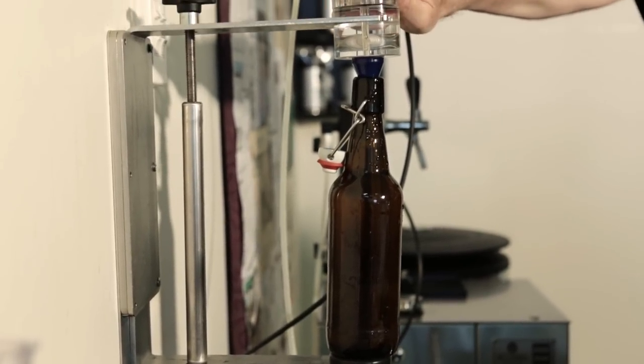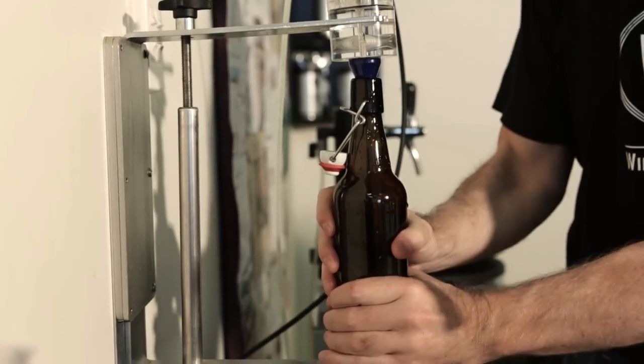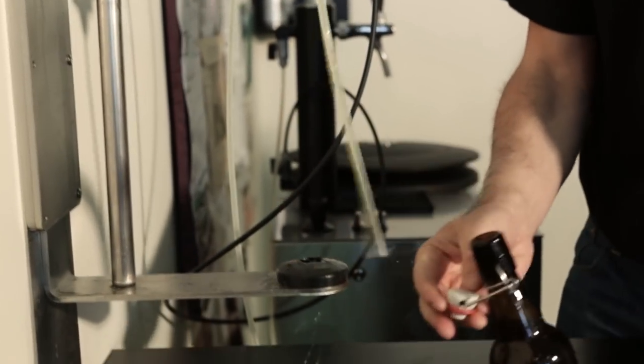When the bottle is full, put the bottling valve in the closed position, remove the bottle, and put the top on it.